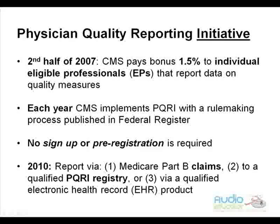Just like we look at the Federal Register — the physician's final rule published every November — that's exactly where you're going to find a good deal of the decisions that CMS makes in this PQRI program. We will need to constantly be updating ourselves. When this program first started, everybody was fairly confused by it because it's a new program. Luckily for anesthesia, it was one of the easiest to report because we just started with that one measure 30, which was the antibiotics. Now they're adding to it, and they will add every year.